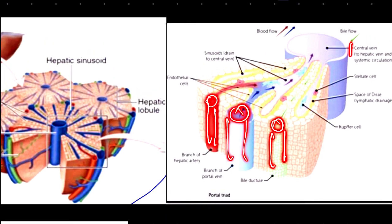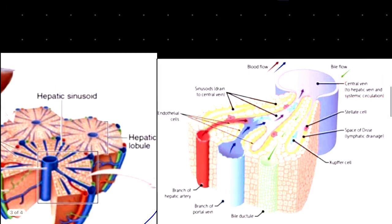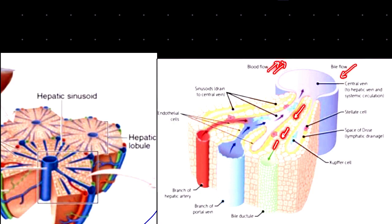The blood flow and arterial flow move in one direction, while the bile flow moves in the opposite direction toward the bile duct.